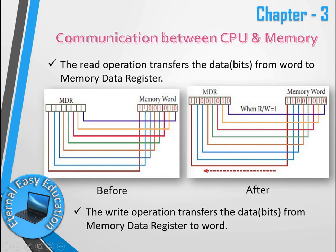In RAM, data is stored in 8-bit words. You can see an 8-bit number — these 8 digits are transferred from memory into the MDR, with each bit mapped to the corresponding position in the register. The word size and the MDR size must match. Before the read operation the MDR is empty; after it, the data is copied into the register. The write operation transfers data bits from the MDR back to the memory word — the reverse of read.